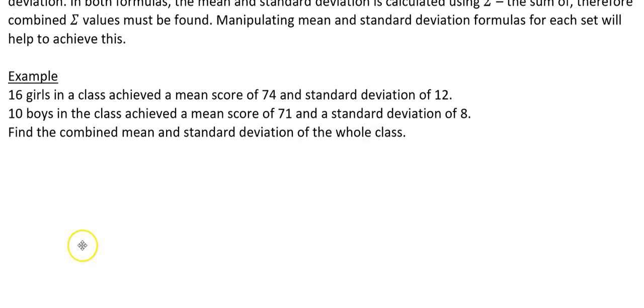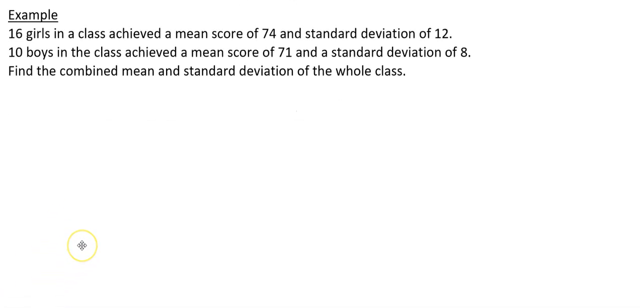Let's jump to the example. 16 girls in the class achieved a mean score of 74 and a standard deviation of 12. 10 boys in the class achieved a mean score of 71 and a standard deviation of 8. Find the combined mean and standard deviation of the whole class.